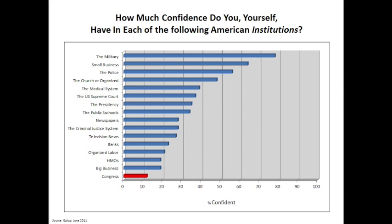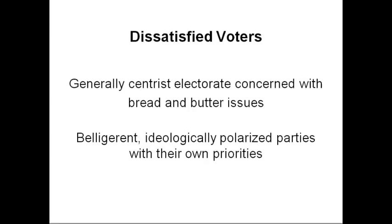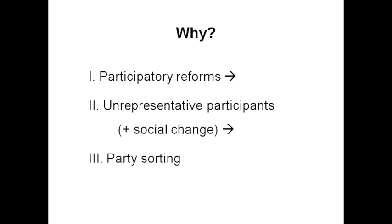To sum up, we have dissatisfied voters who are generally centrist, concerned with bread-and-butter issues — their jobs, their kids' education, etc. And we have two belligerent, ideologically polarized parties which have their own priorities. So those are the disconnects. Why? The argument I make is that there's a series of participatory reforms that were set up in the 60s which had unintended consequences. They resulted in politics becoming increasingly unrepresentative — the people who participated became increasingly unrepresentative. Combined with some social changes, it led to what I call party sorting. Not party polarization — party sorting.